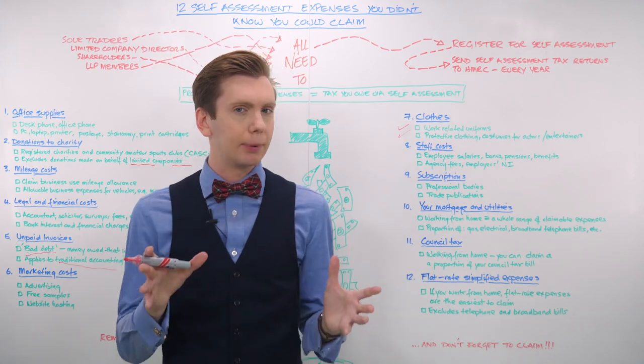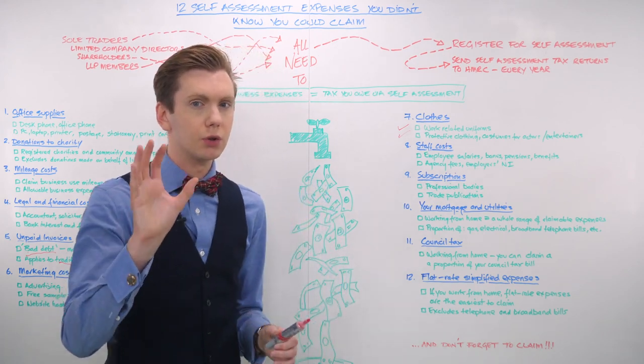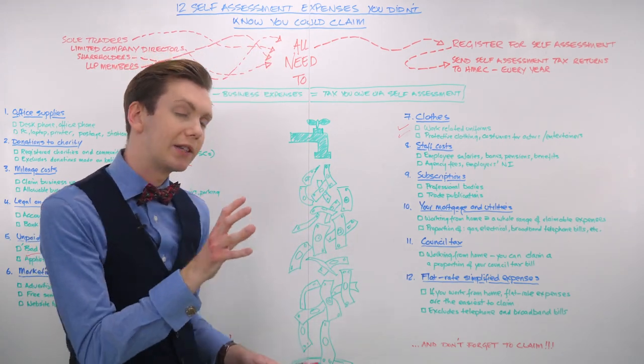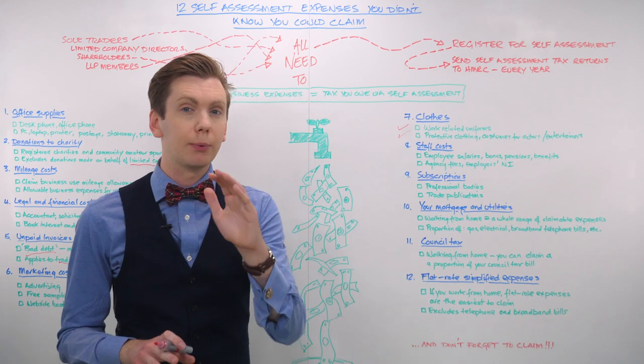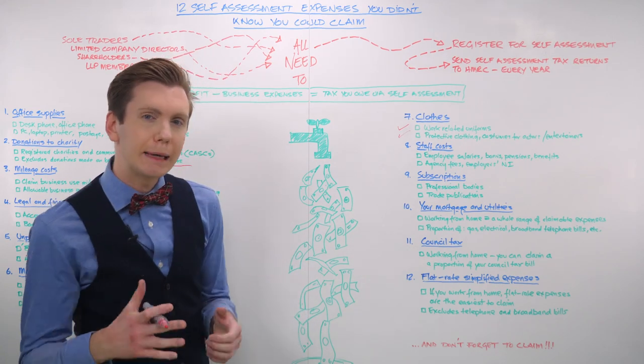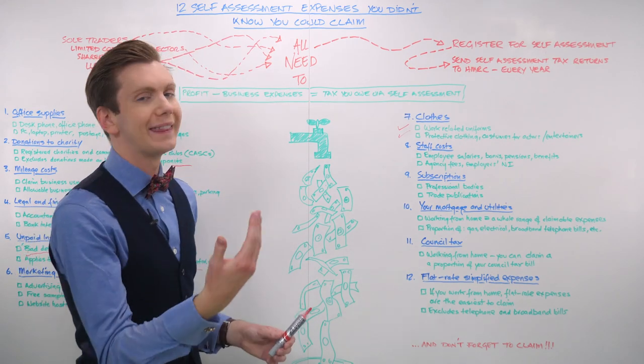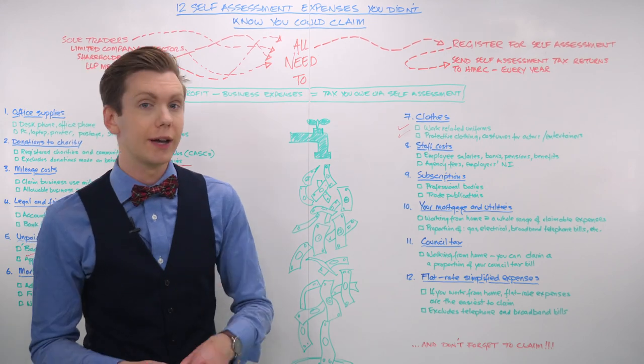There are a couple of staff costs that HMRC does not view as permitted business expenses. For example, you are not allowed to claim costs associated with a nanny or a childminder as an expense.